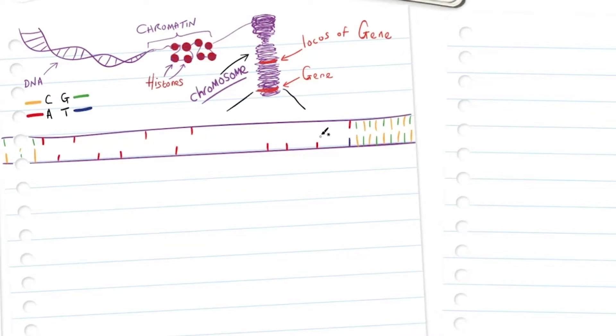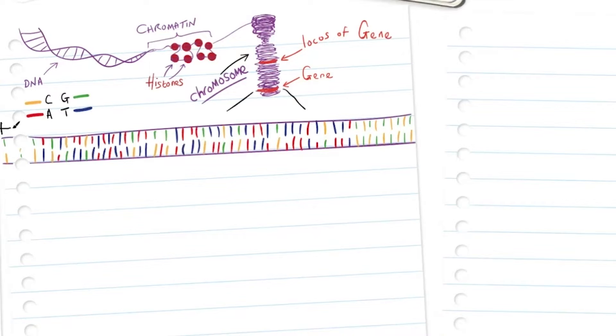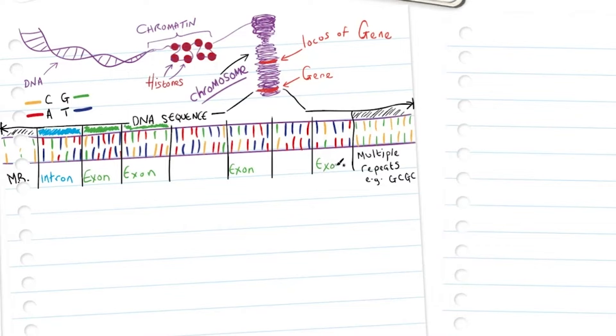If we zoom into a section of a gene, we can look at the DNA sequence. Each end of that gene has a sequence of multiple repeats, for example repeating nucleotides such as guanine-cytosine, guanine-cytosine, etc. The DNA sequence is also divided into regions that are expressed and regions that are not expressed, i.e., introns and exons.